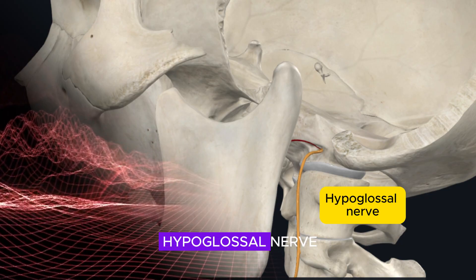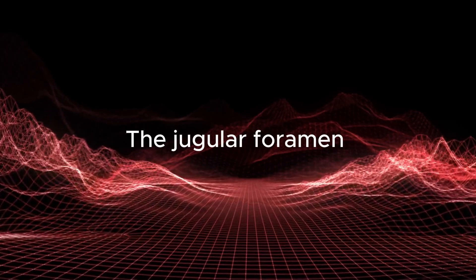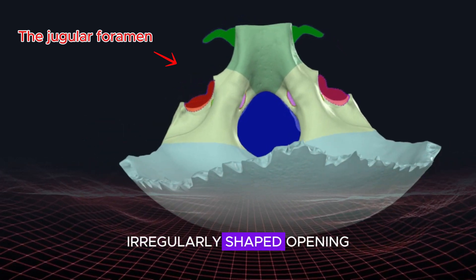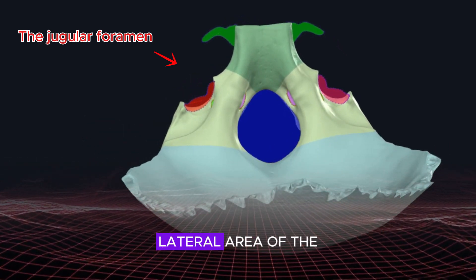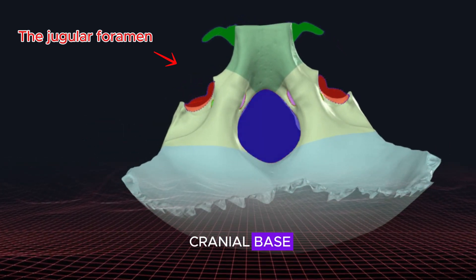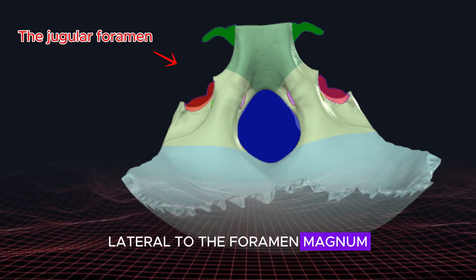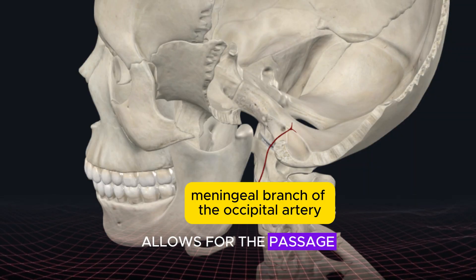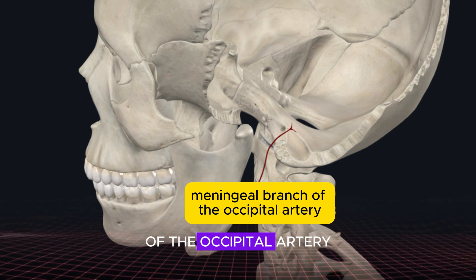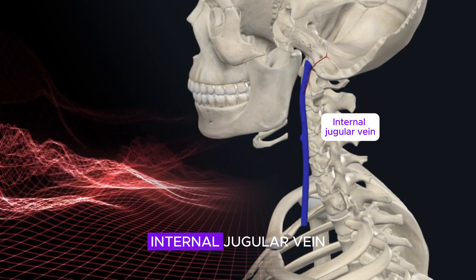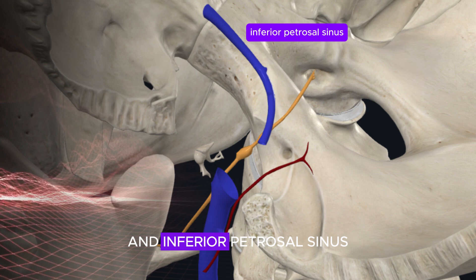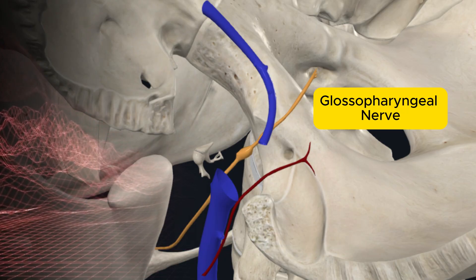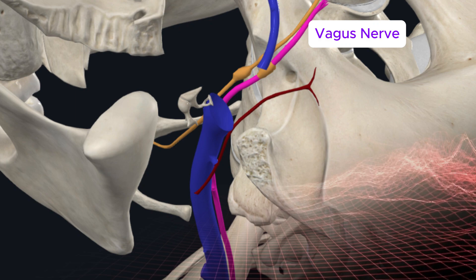The jugular foramen is a large, irregularly shaped opening found along the posterolateral area of the cranial base, lateral to the foramen magnum. It allows for the passage of the meningeal branch of the occipital artery, internal jugular vein, inferior petrosal sinus, glossopharyngeal nerve, and vagus nerve.